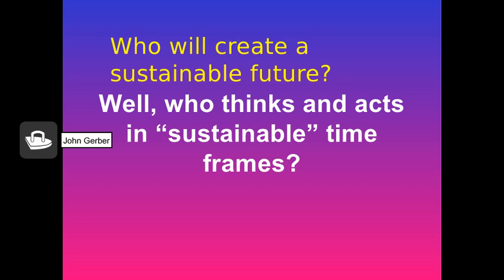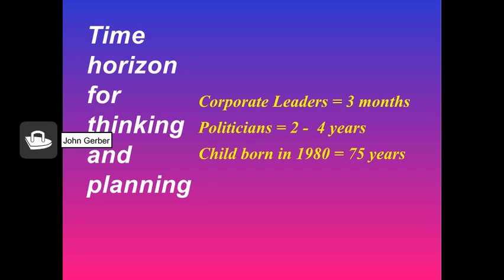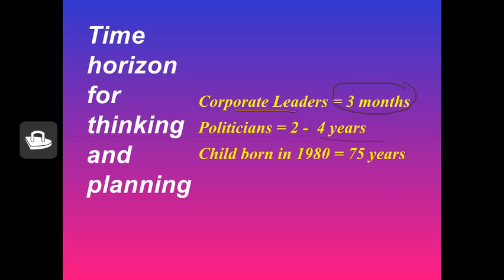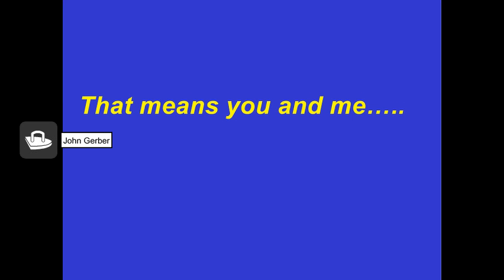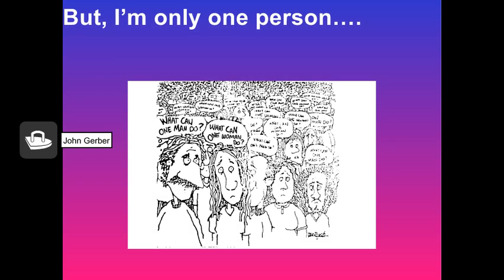Let's ask: who will create a sustainable future? Who thinks in sustainable timeframes? Any child can think in a timeframe of 75 years or more. Politicians have to get reelected every two, four, or six years — they can't afford to think in sustainable timeframes. Corporate leaders have to show increased profitability every three months to stay in power. Even the best corporate leaders don't have the ability to think in sustainable timeframes. So who is left? Just you and me. What can one person do? There are a lot of us.